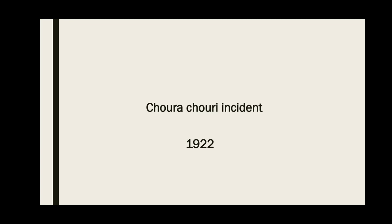After that, the Chauri Chaura Incident, 1922. The Chauri Chaura Incident took place on 4 February 1922 at Chauri Chaura in the Gorakhpur District of United Province, known as UP, in British India. When a large group of protesters participating in the non-cooperation movement clashed with police, who opened fire.